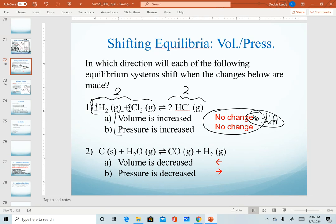For the second example, notice we have a carbon solid listed in our equation. Everything else is gases, but this solid is not going to be affected by changes in volume or pressure. For this reaction, I only have 1 mole of reactant gas and 2 moles of product gas. If I decrease my volume, I'll shift to the side with fewer moles, to the left. If pressure is decreased, this is the same as increasing volume, so I'll shift to the side with more moles, to the right.